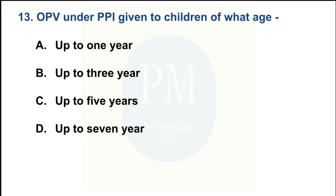Under PPI, vaccine is given to children of what age? Option A — up to 1 year; Option B — up to 3 years; Option C — up to 5 years; Option D — up to 7 years. The correct option is Option C: up to 5 years.